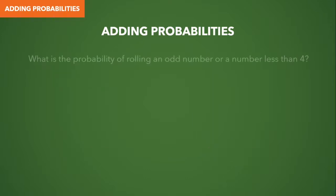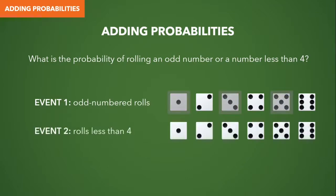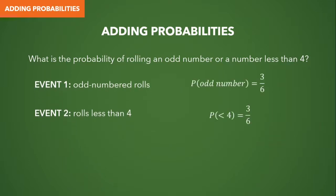But what if we are dealing with conjoined events? Say we are interested in the probability of rolling an odd number or a number less than 4. Our first event — rolling an odd number — gives us 1, 3, and 5. Our second event — a number less than 4 — gives us 1, 2, and 3. These two events are not mutually exclusive because we can have outcomes that are both odd and less than 4, namely 1 and 3. Because they are not mutually exclusive, we cannot simply add the probabilities of the two events.